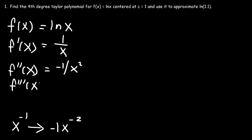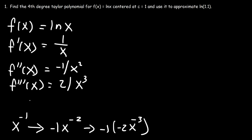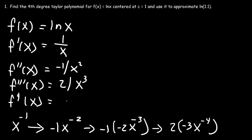For the third derivative, the derivative of x^(-2) is -2x^(-3), so the third derivative is positive 2/x³. Now the fourth derivative: 2 times the derivative of x^(-3) gives -3x^(-4), so the fourth derivative is -6/x⁴.